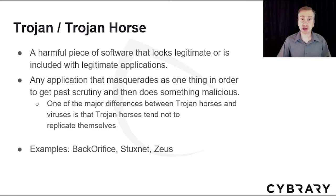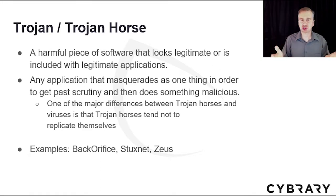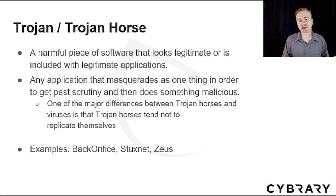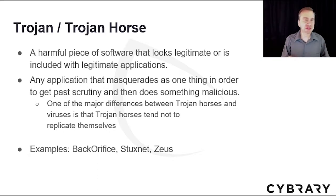A Trojan horse is a harmful piece of software that looks legitimate or is included with legitimate applications. Like the historical Trojan horse, it appears benign on the outside but is malicious on the inside. A Trojan horse masquerades as one thing to get past scrutiny and then performs malicious activity. One major difference between Trojan horses and viruses is that Trojan horses tend not to replicate themselves. Examples include Back Orifice, which hid within the Whack-a-Mole game, Stuxnet, and Zeus.